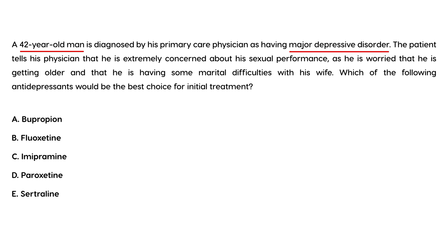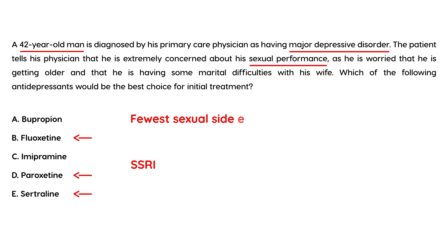Third vignette: a 42-year-old man is diagnosed with major depressive disorder. He tells his physician that he is extremely concerned about his sexual performance, is worried about getting older, and is having some marital difficulties with his wife. Which antidepressant would be the best choice for initial treatment? The physician would want to prescribe an antidepressant that does not cause sexual side effects. As mentioned earlier, the antidepressant with the fewest sexual side effects is bupropion.